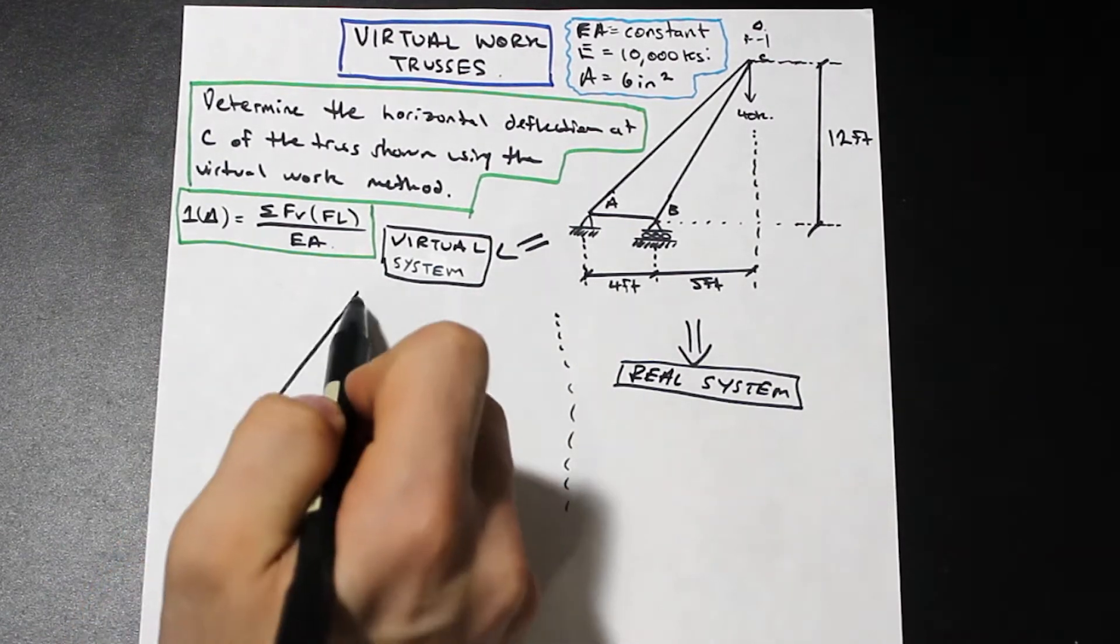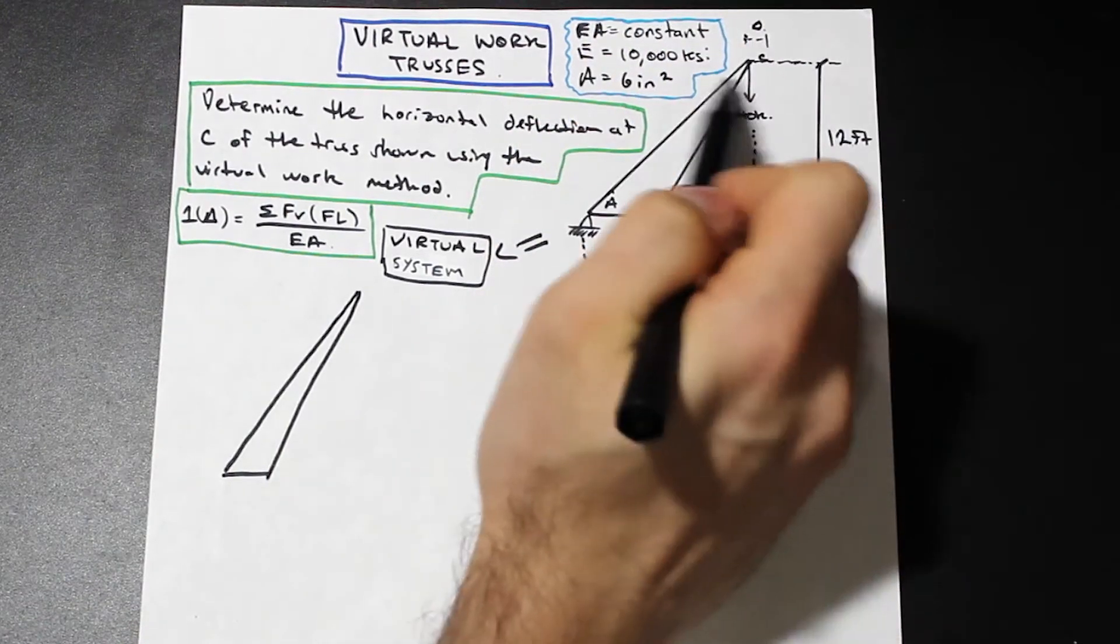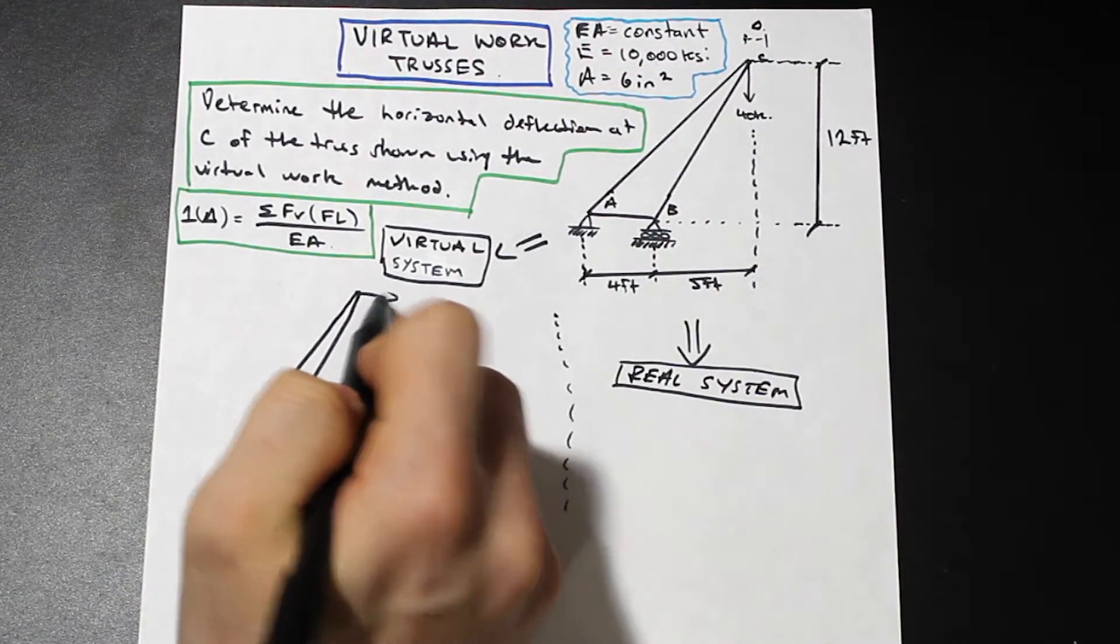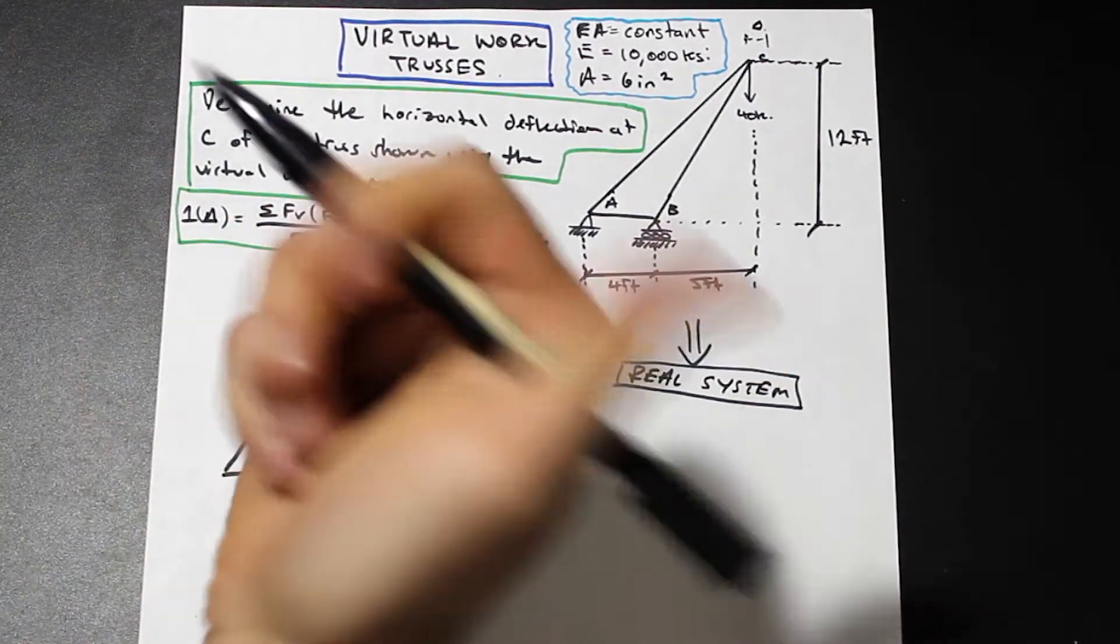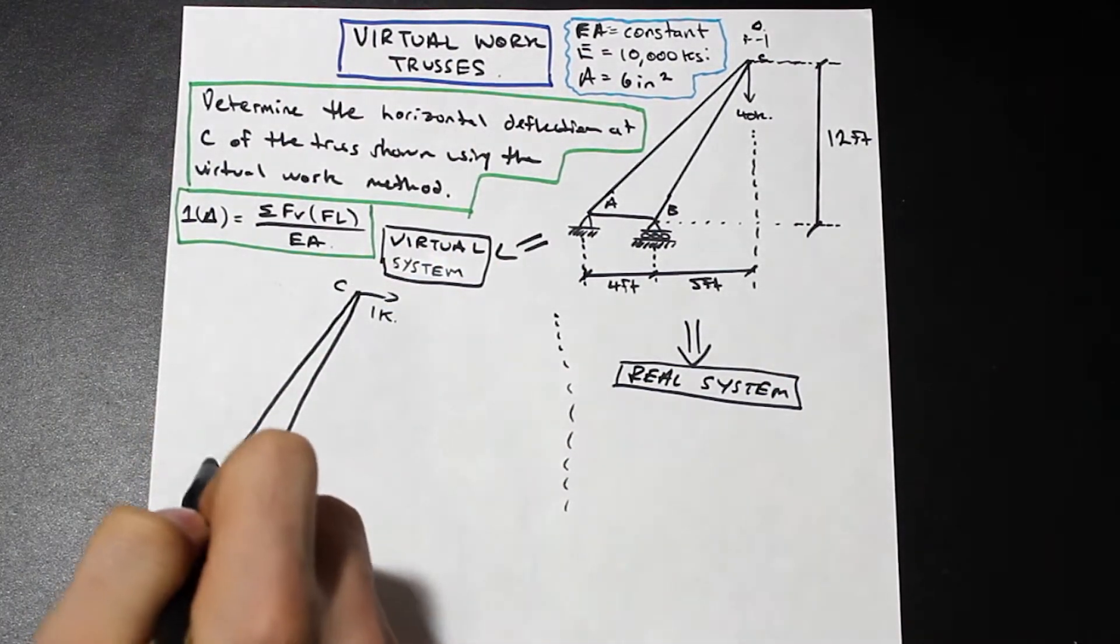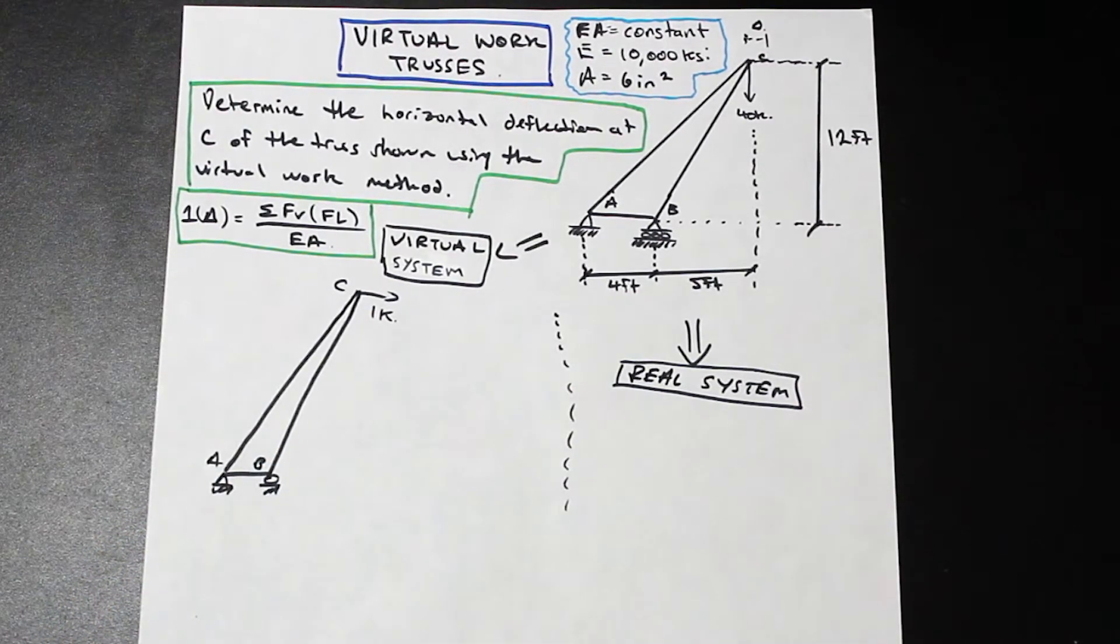Let's just draw what this looks like. We're going to redraw our truss system here. We take off all the external loading, so we take off this 40 kip. And then we add, because it's horizontal as I said, we add a one kip force to the right. This is point C, this is A and B. That's essentially it.